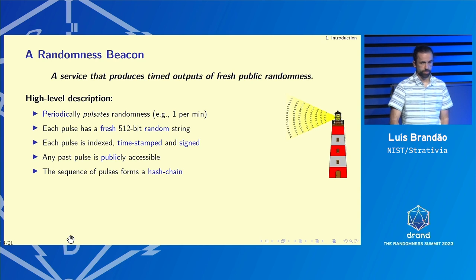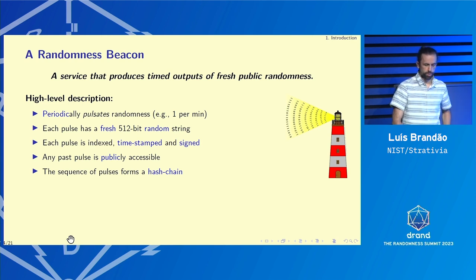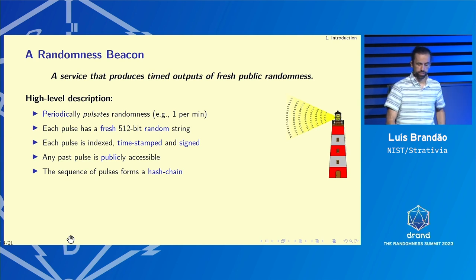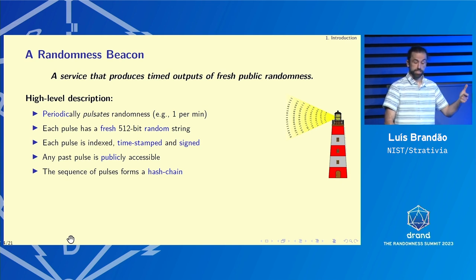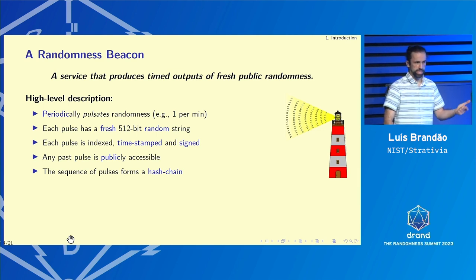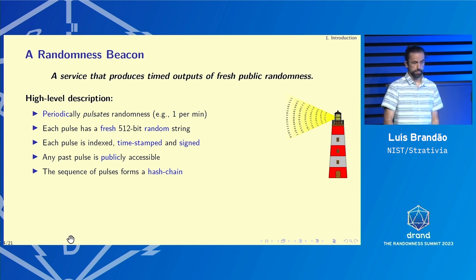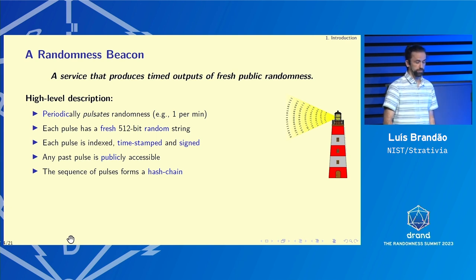There are a lot of keywords here. At a high level, we want some periodicity to produce what we call pulses — streams of information that contain some randomness. In the case of the NIST beacon implementation, these are once per minute. Each pulse needs to have a certain amount of randomness — the NIST beacon has 512 bits. Each pulse needs to be indexed so there's no ambiguity, timestamped, and signed. Any past pulse needs to be publicly accessible forever, and the sequence of pulses should form a hash chain to maintain a well-defined history.